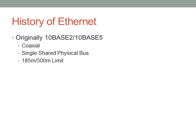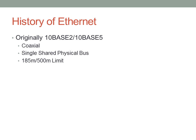Ethernet originally started as 10Base2 and 10Base5. These were called Thinnet and Thicknet, respectively. Originally Ethernet used a single coaxial cable that ran from computer to computer, one after the other, and they shared a single physical bus — that bus was the coaxial cable. 10Base2 had a maximum cable length limit of 185 meters, and 10Base5, Thicknet, had a length limit of 500 meters. If you wanted to go beyond that, you had to use some form of a repeater.